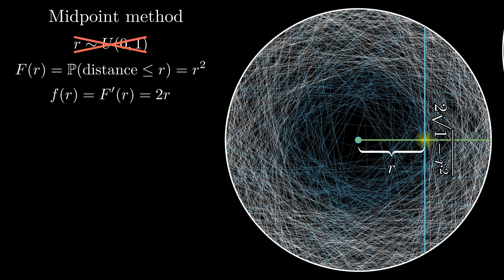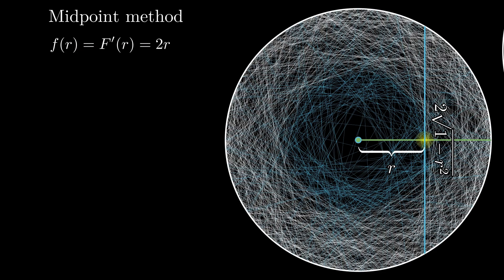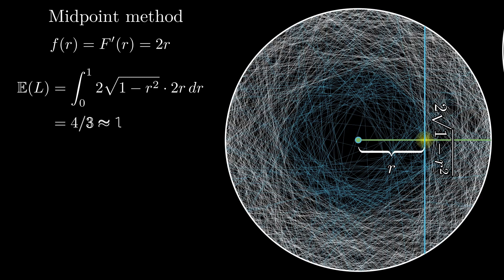The density function of r is then the differential of this quantity, which is 2r. The expected length of the chord in this case is then the integral of twice the square root of 1 minus r² times 2r dr, the density function of r, as r ranges from 0 to 1. This evaluates to 4/3 or about 1.34.